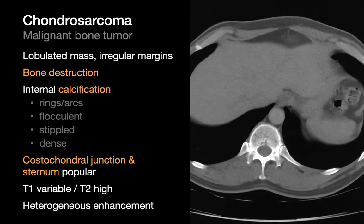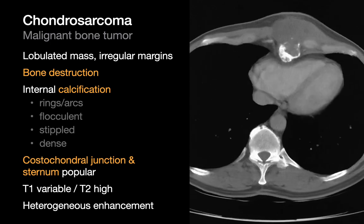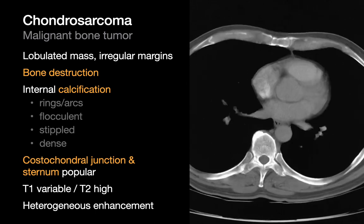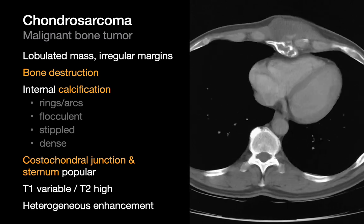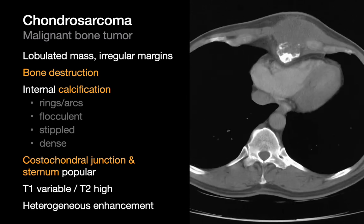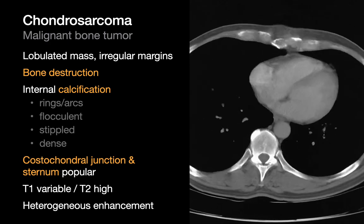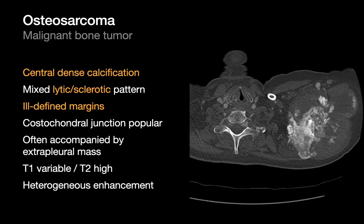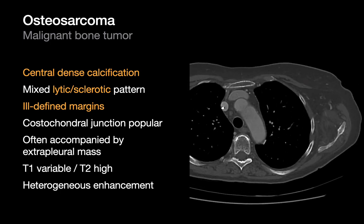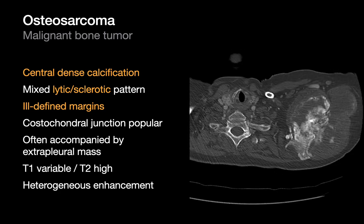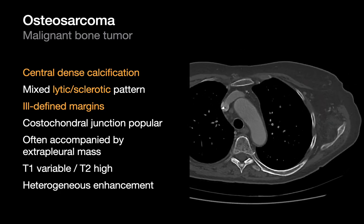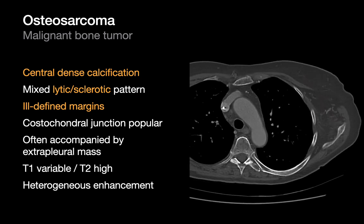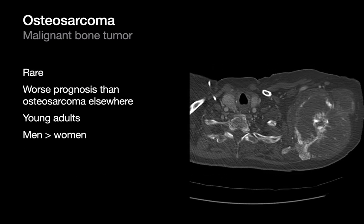Chondrosarcomas can resemble osteochondromas and chondromas on chest x-ray. The sternum and costochondral junctions are common sites. Tip-offs for chondrosarcomas in the chest wall include aggressive bone destruction and cartilaginous matrices with calcifications that might appear flocculent, stippled, or as rings and arcs. Osteosarcomas are the other aggressive uncommon bone tumor of the chest wall, featuring bone destruction, aggressive periosteal reaction, and dense central calcification or ossification. The prognosis of osteosarcoma when it occurs in the chest wall is particularly poor.